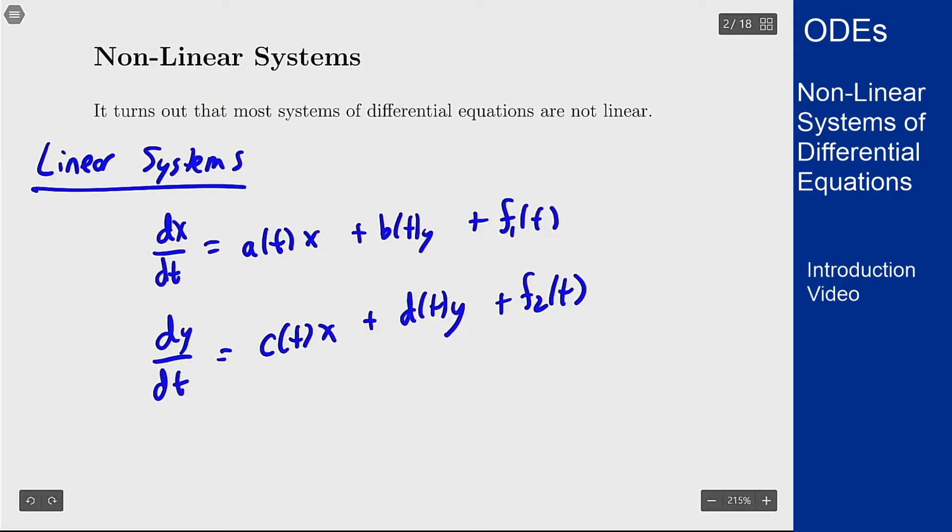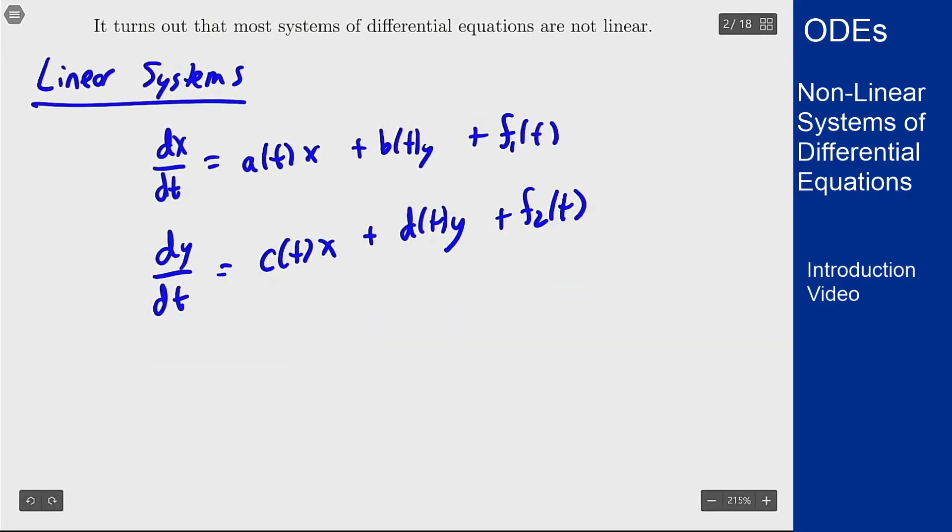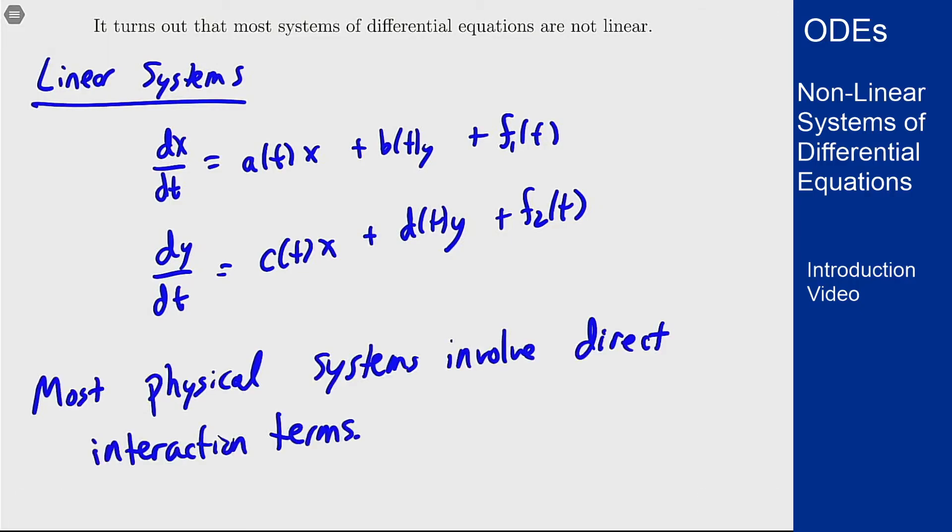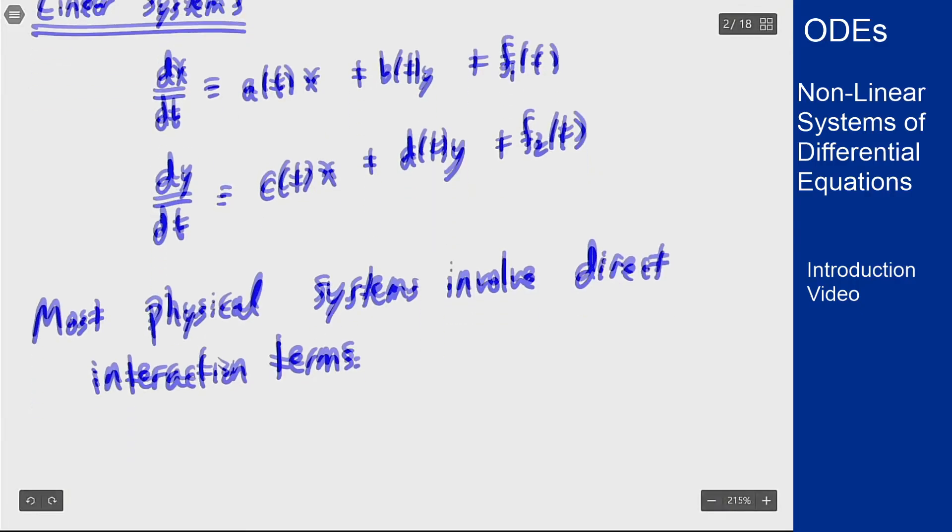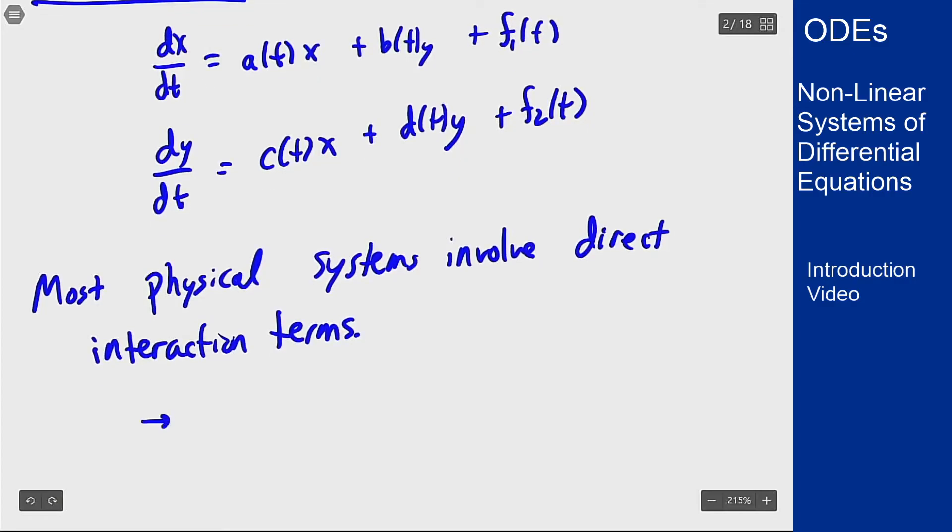But a lot of real world situations involve direct interaction between these two functions. So if you want to model something like a predator-prey dynamic, or a computer-season dynamic, or a chemical reaction, you're going to need some sort of interaction terms. And these are usually written with a product of the two functions. It looks something like an x times y, but that makes the equation non-linear.